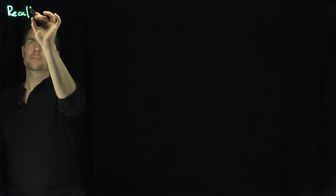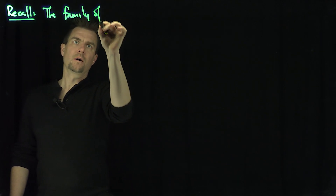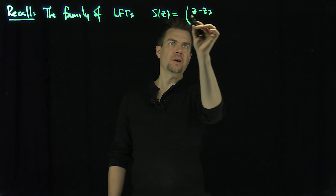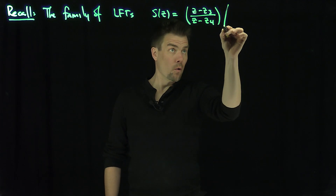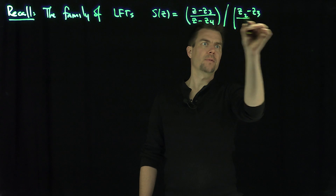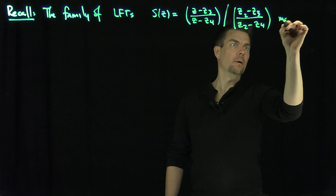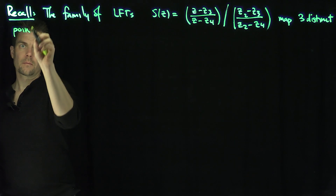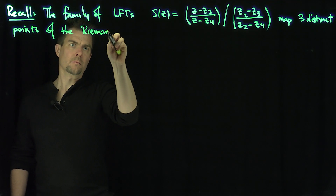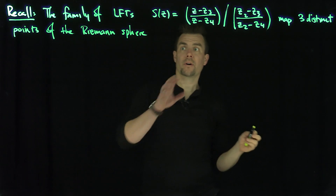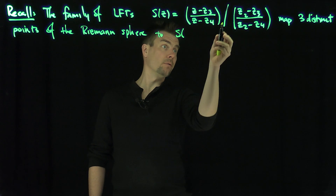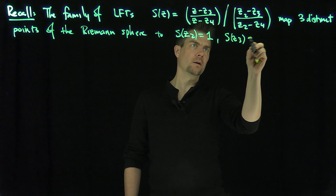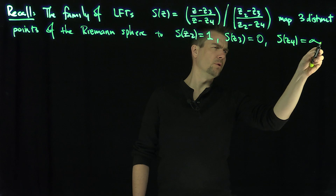Let's recall the family of LFTs, S of Z, which is Z minus Z3 over Z minus Z4, divided by Z2 minus Z3 over Z2 minus Z4. This maps three distinct points of the Riemann sphere to the following points: if we plug in Z2 we go to 1, if we plug in Z3 we go to 0, and if we plug in Z4 we go to infinity.